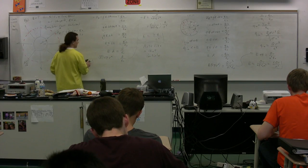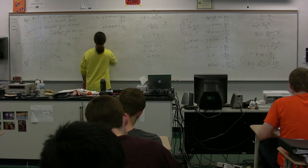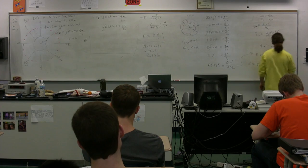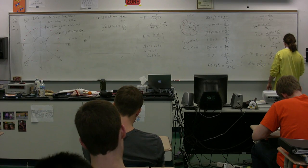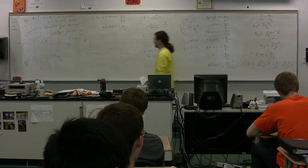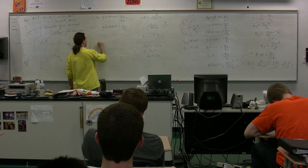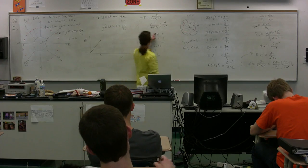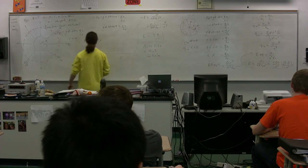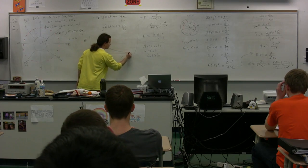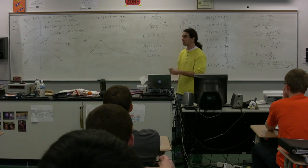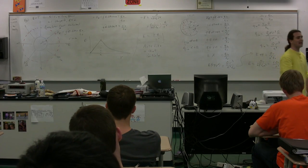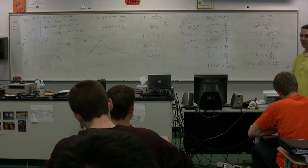Looking at the electric field as a function of position: k, Q, and a cubed are just constants, so inside the sphere it's actually a linear relationship with r. Once you get to the radius a, it transitions to kQ over r squared — an inverse-square relationship. That is the graph for the electric field both inside and outside a positively charged sphere.